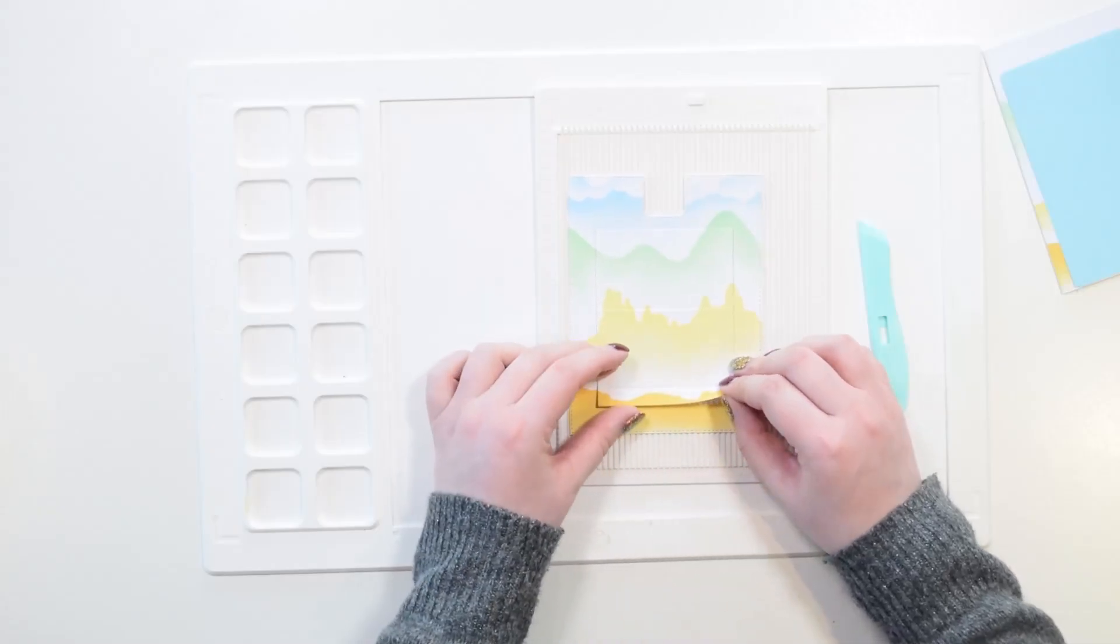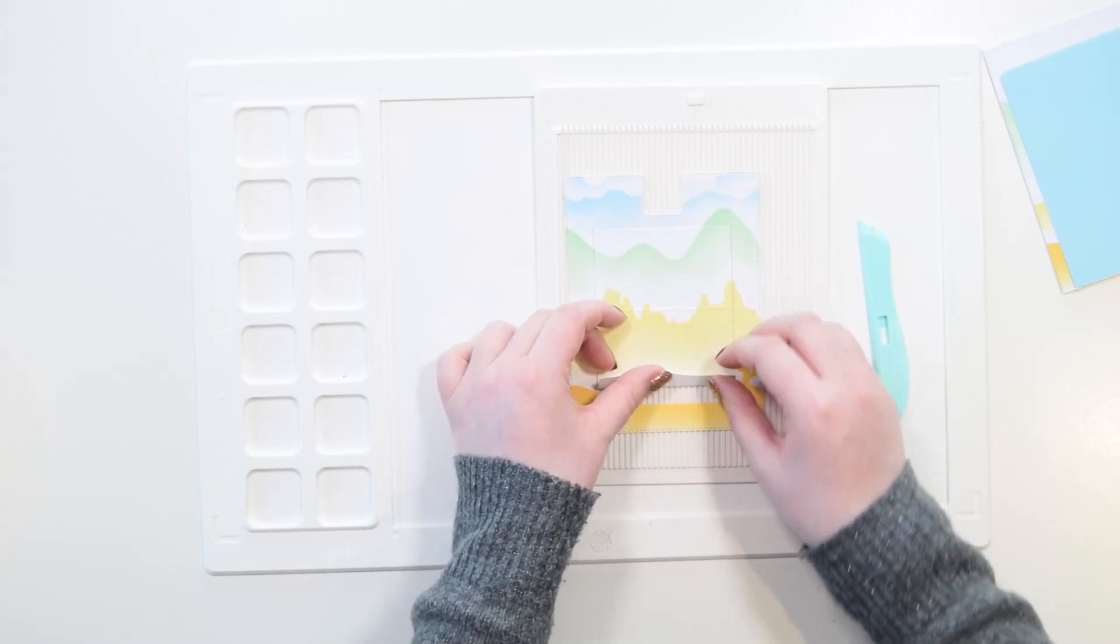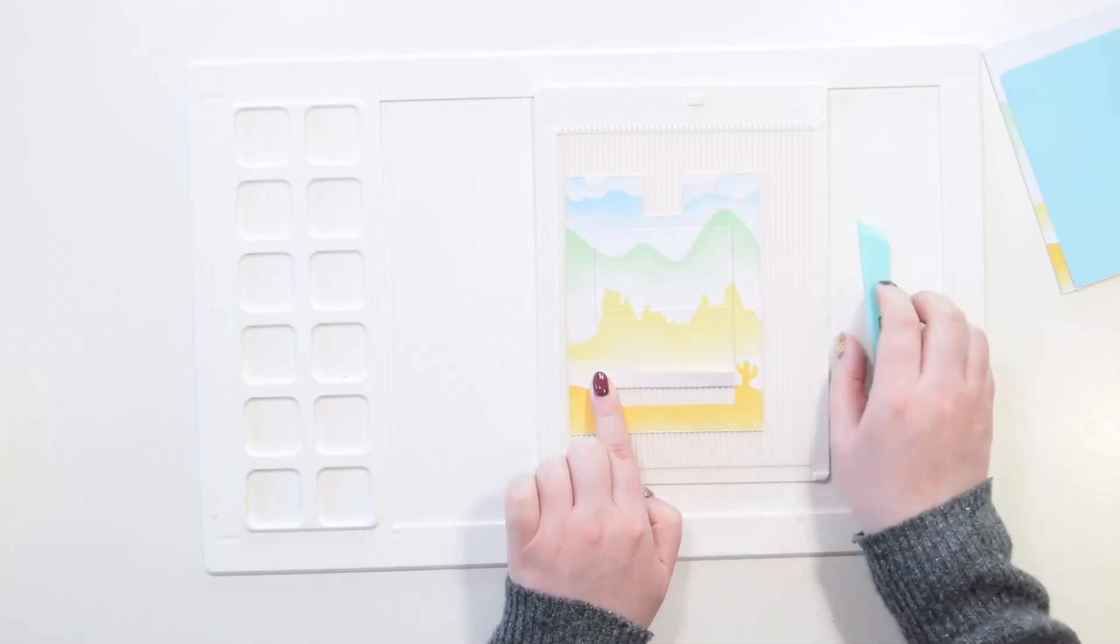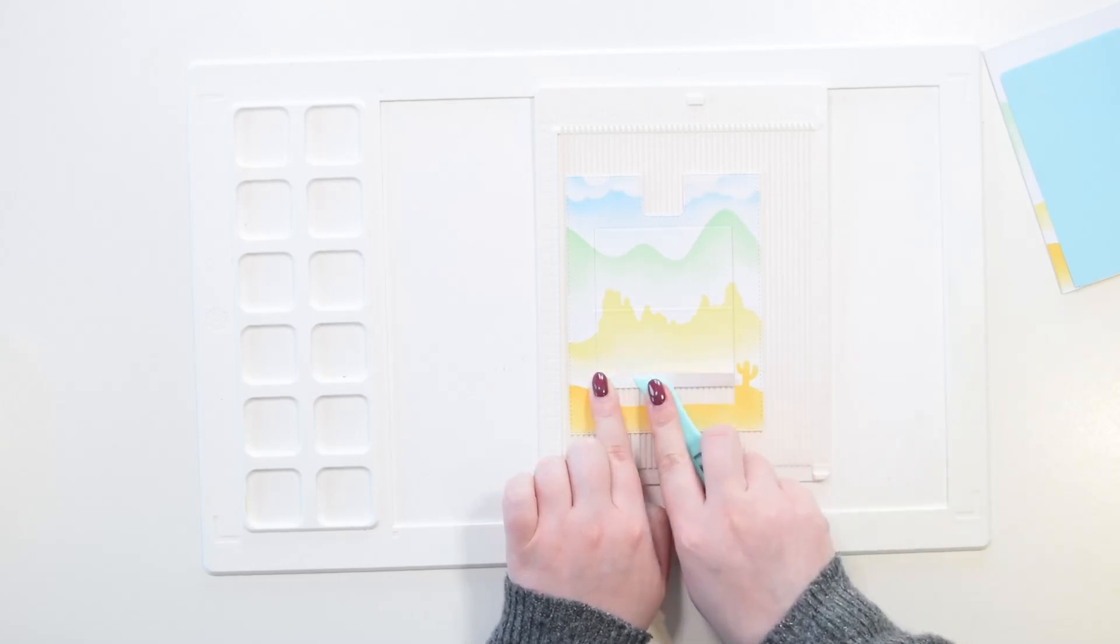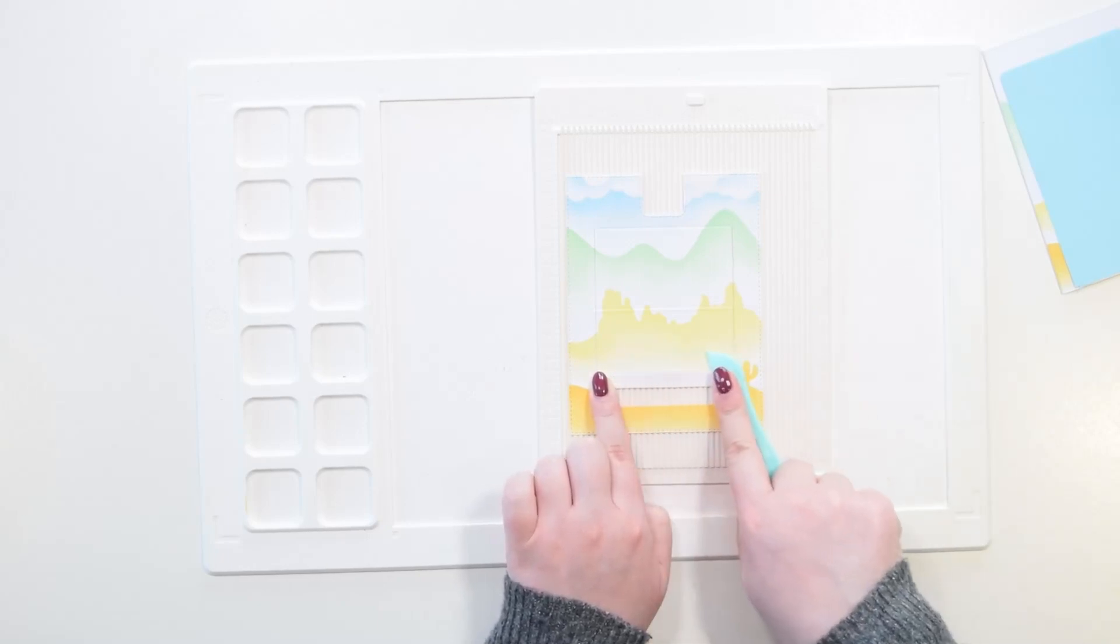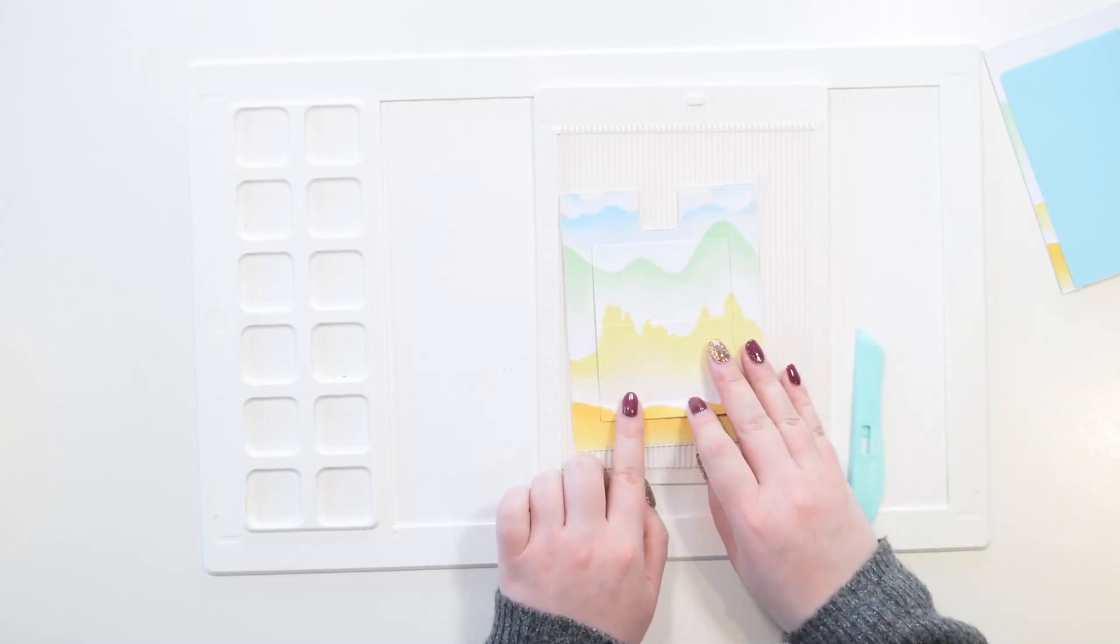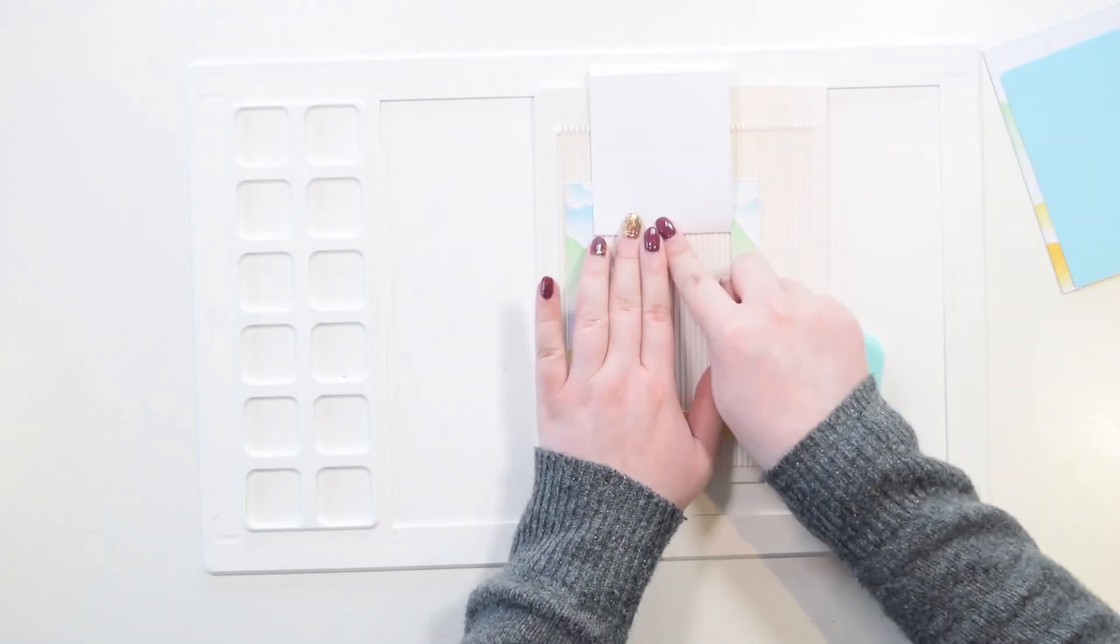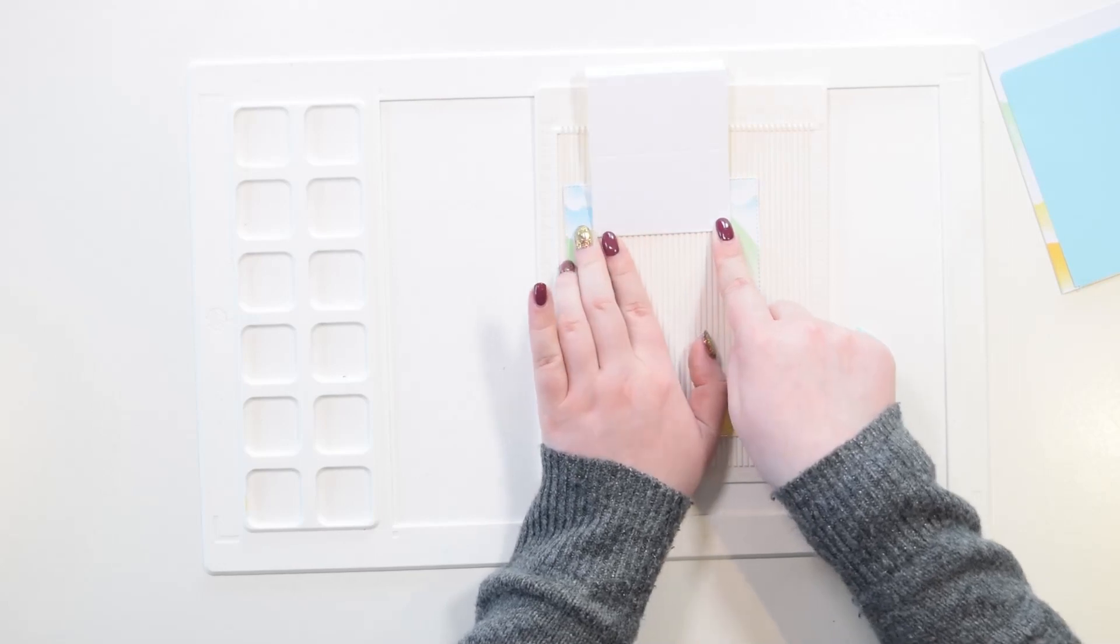So now we get to do some folding. Take this bottom panel or tab and fold it up towards the top of your card along your crease line. Using a scoring tool can help to create this really crisp line.